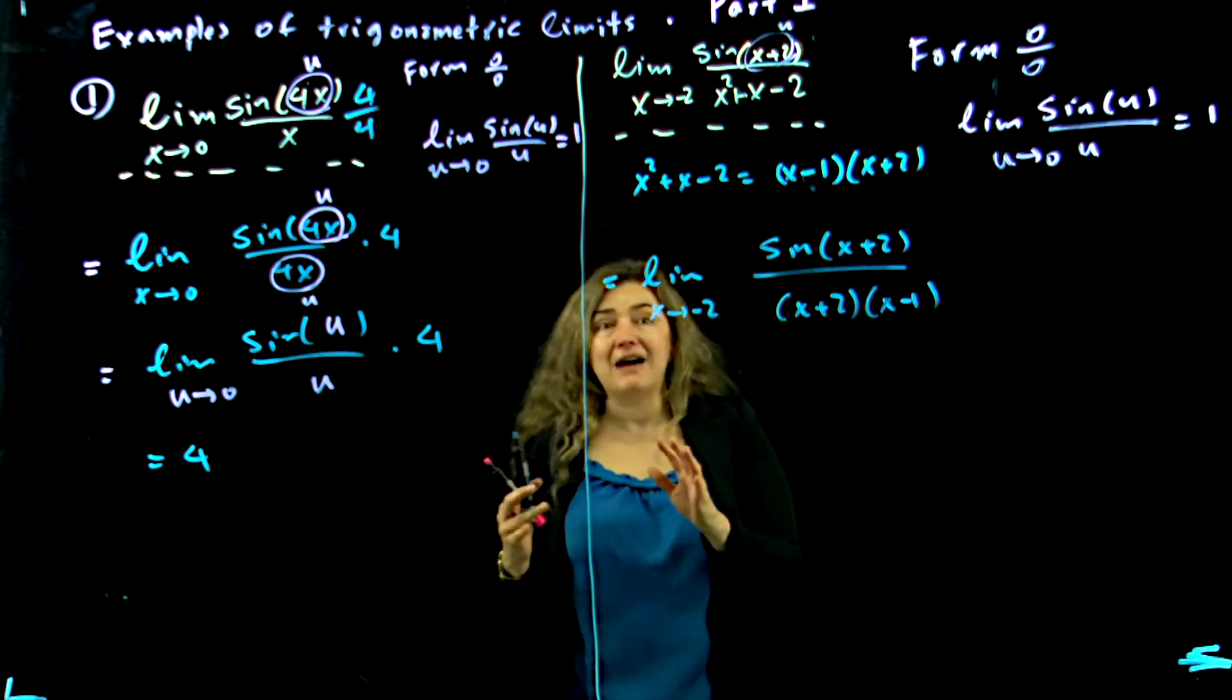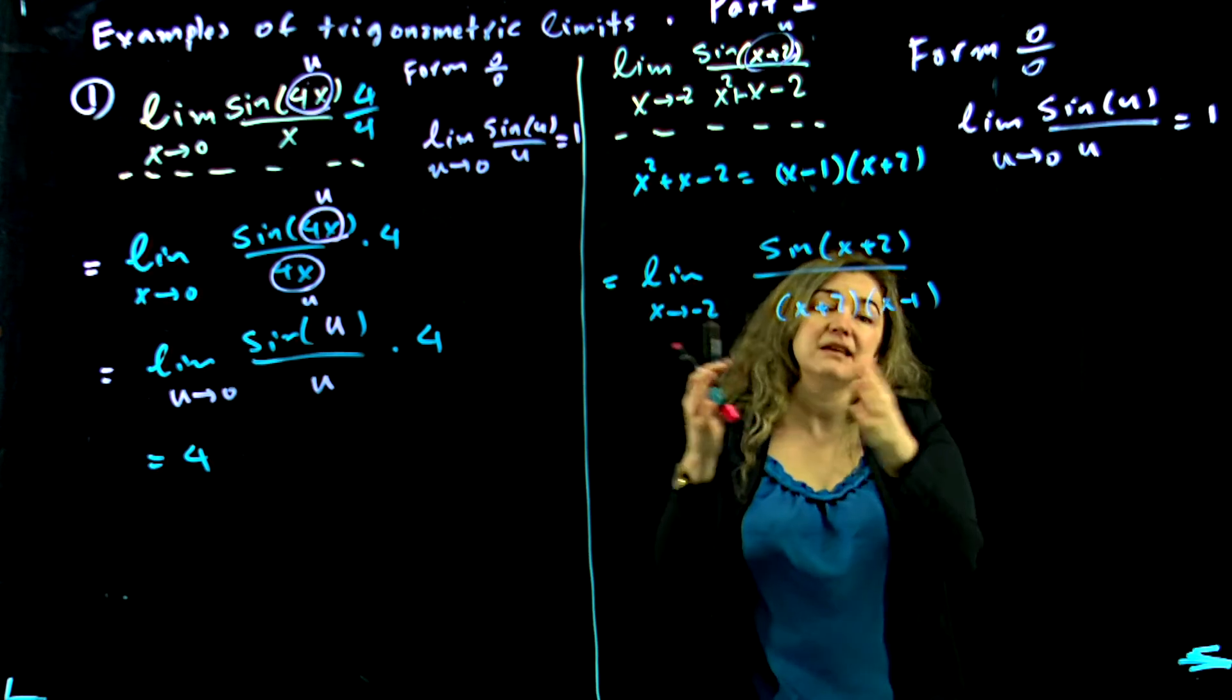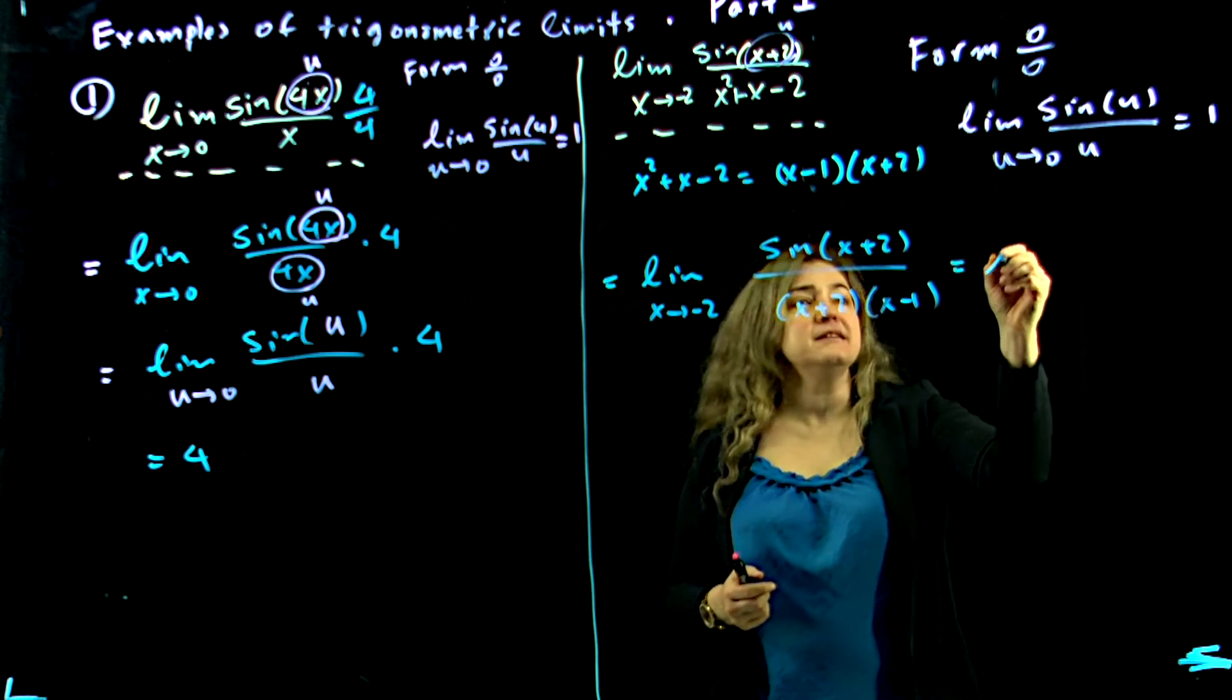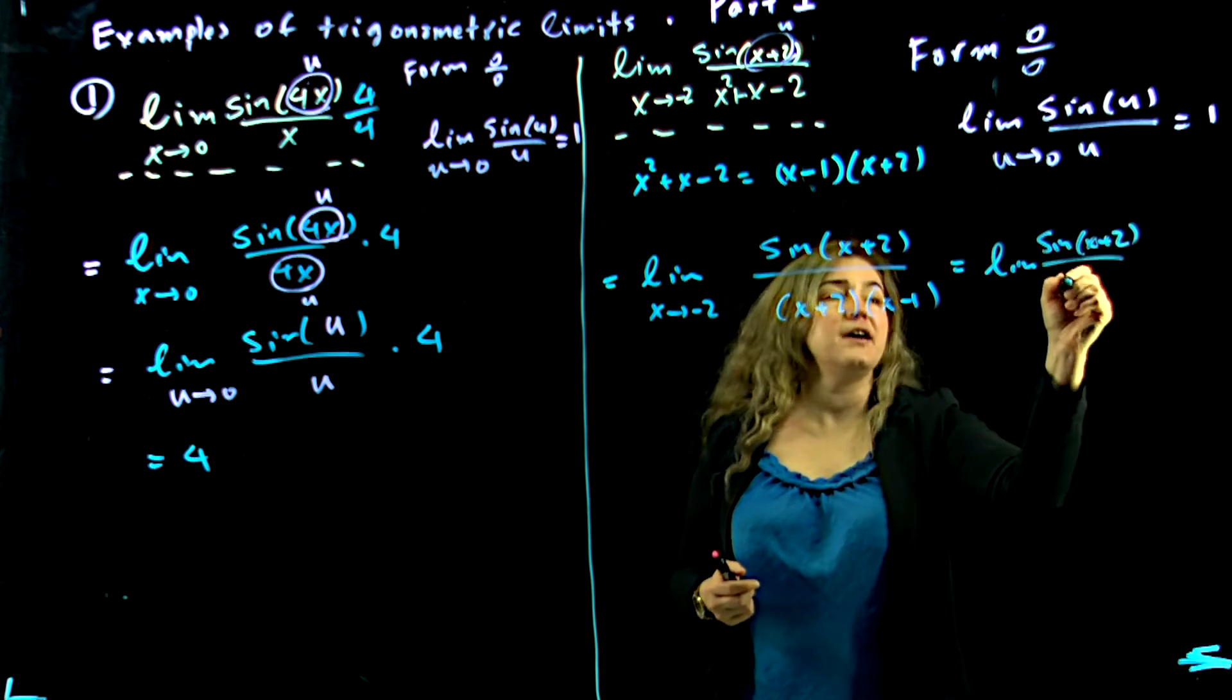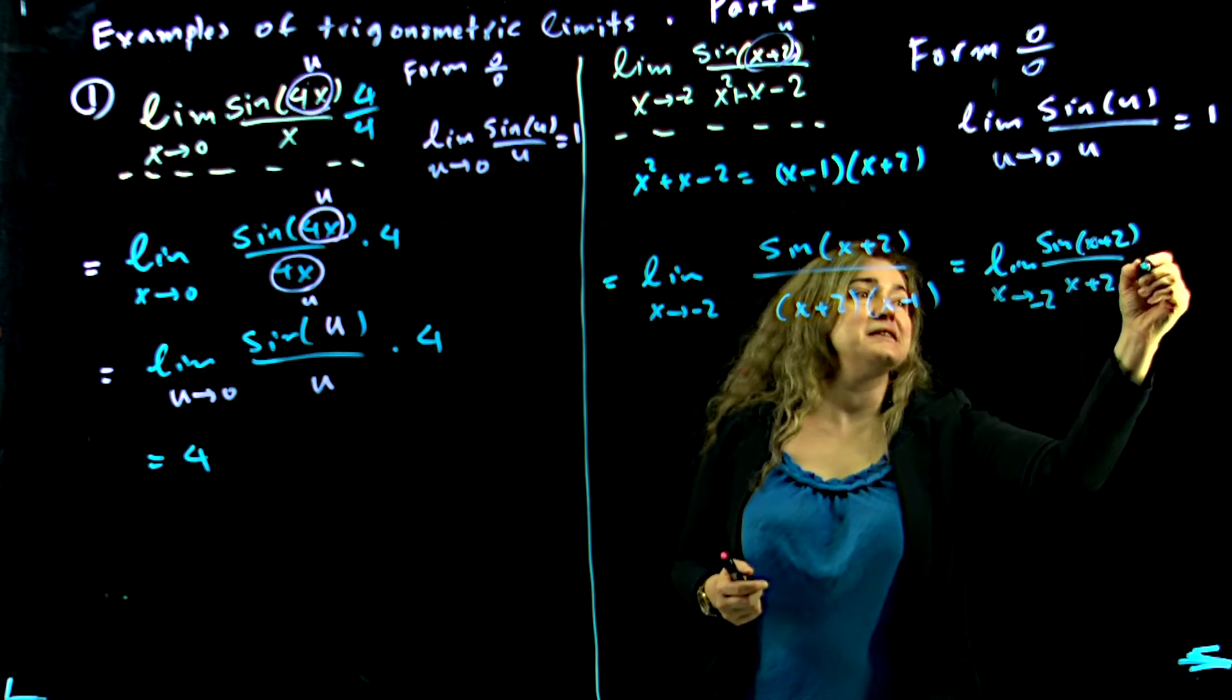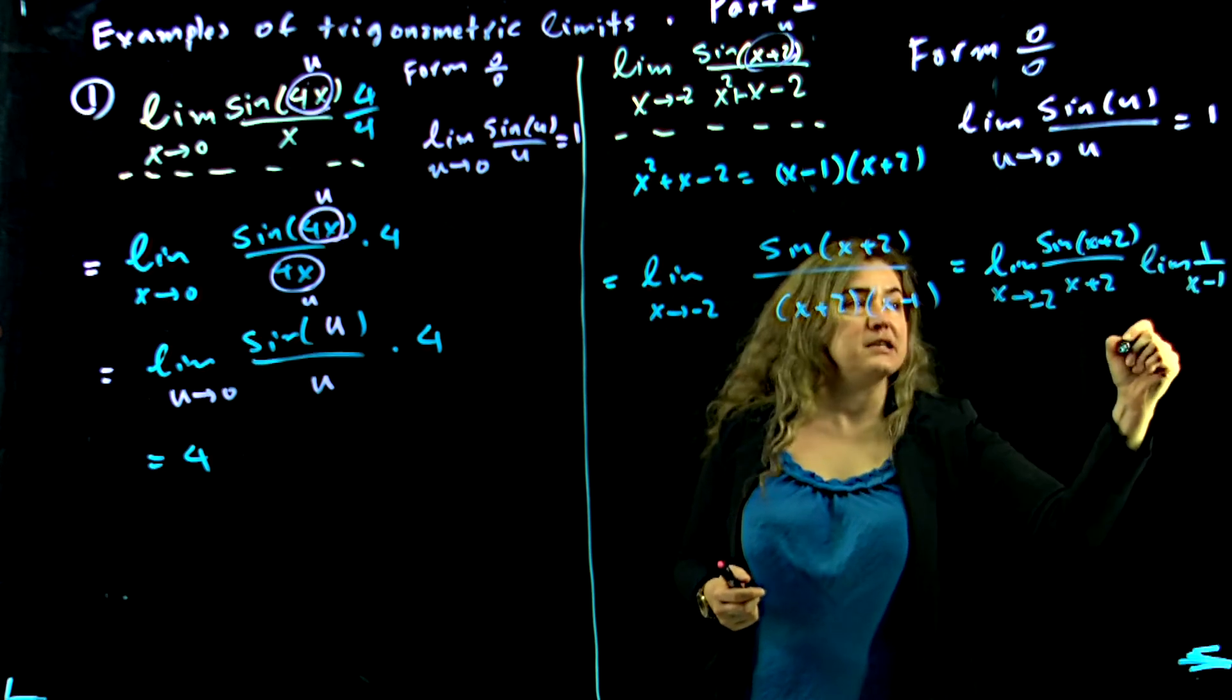If both limits exist, then what you can do is you can write them as a product of the two limits. So I'm going to write it as limit of sine of x plus 2 divided by x plus 2 as x approaches negative 2, times the limit of 1 over x minus 1.